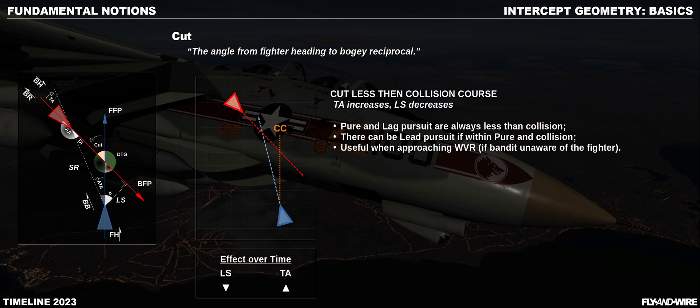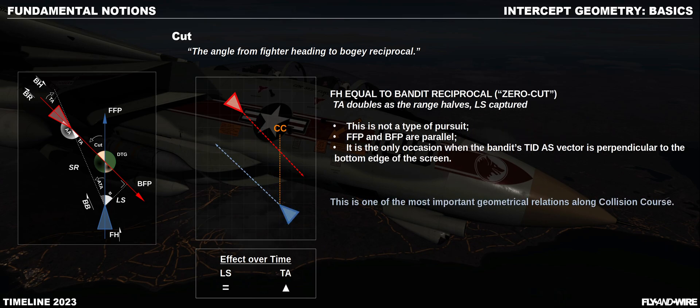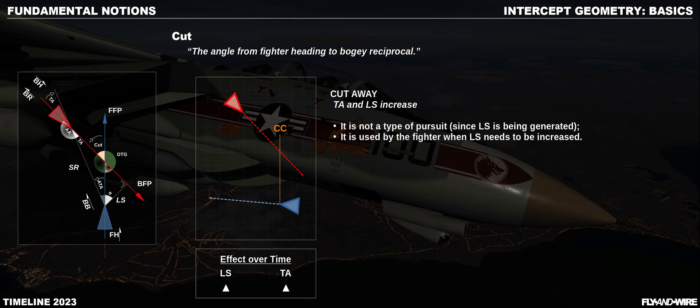When the cut is less than collision, the lateral separation decreases but TA increases. The utility of this situation is better explained when geometry is discussed in greater detail. If the fighter points at the bandit's reciprocal, cut equals zero — a situation often called zero-cut. This is another magic situation. Finally, if the fighter goes its own way with the nose not pointing at the bandit, we have the so-called cutaway. This is the only case when both lateral separation and TA increase, and it's useful, for example, to make room via lateral separation or to mess with a hostile intercept.